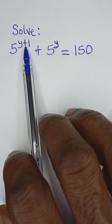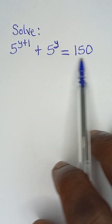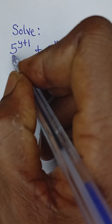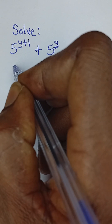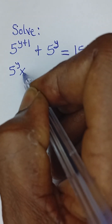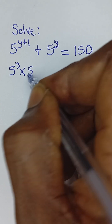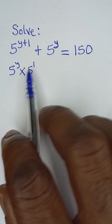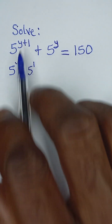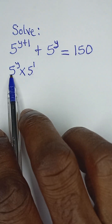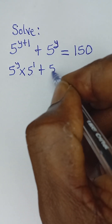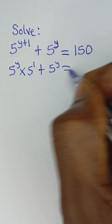Solve 5 raised to the power y plus 1, plus 5 raised to the power y, is equal to 150. From the law of indices, 5 raised to the power y plus 1 can be expressed as 5 raised to the power y, multiplied by 5 raised to the power 1. So 5 raised to power y plus 1 is expressed as this, and then plus 5 raised to power y is equal to 150.